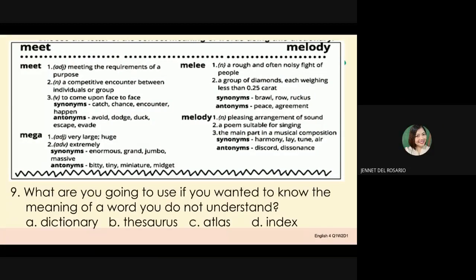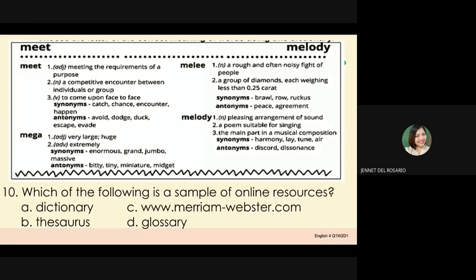Number 9: What are you going to use if you wanted to know the meaning of a word you do not understand? A. Dictionary. B. Thesaurus. C. Atlas. D. Index. Last number — Number 10: Which of the following is a sample of online resources? A. Dictionary. B. Thesaurus. C. www.miriamwebster.com. D. Glossary.